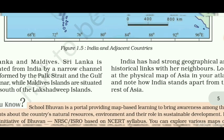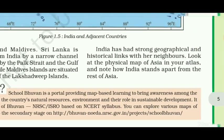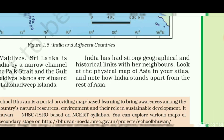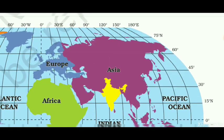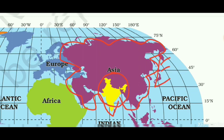Now the last paragraph: India has had strong geographical and historical links with her neighbors. Looking at the physical map of Asia, we can see that India is centrally located between East and West Asia. The strategic location of India has contributed to the exchange of ideas and commodities through land and ocean since ancient times.